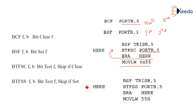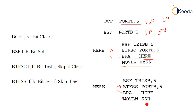Second instruction: BTFSS — bit test file skip if set. Same file, bit test file skip if set: if it is set, then skip to this instruction; otherwise, keep moving on. Here it is already set, so it will immediately skip this instruction and move to MOVLW 0x55 — load the WREG with the literal value 55. Thank you.